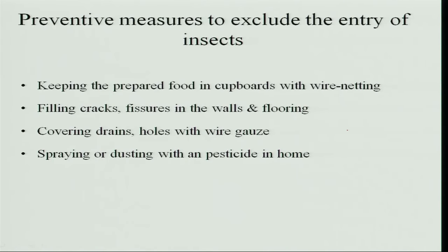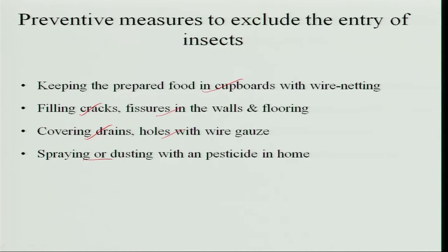To prevent the entry of insects, put prepared food in cupboards with wire mesh so that insects, rats, and mice cannot enter. Prepared food should always be covered and not left open. Fill cracks and fissures on walls and flooring so that small insects, ants, and cockroaches do not creep up. Cover drain holes with wire gauze so that cockroaches do not enter the kitchen from the drainage. Spray or dust the house with a mild pesticide that will not affect children but will stop insects from entering.